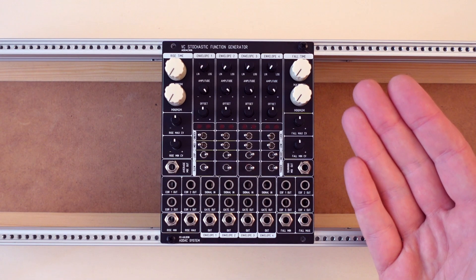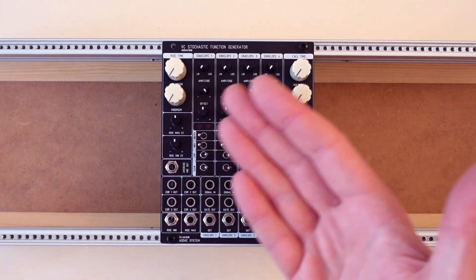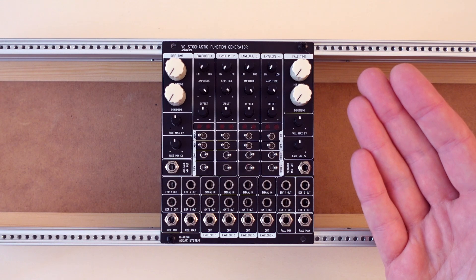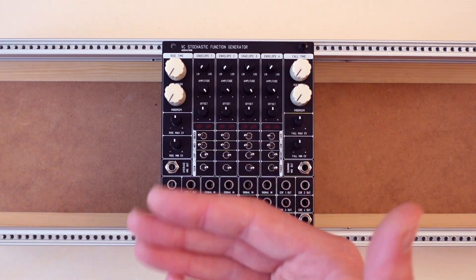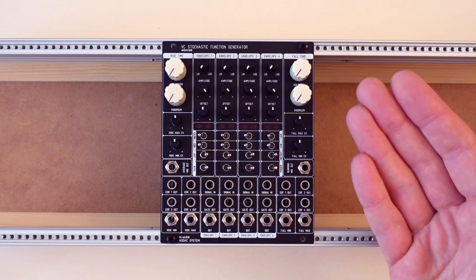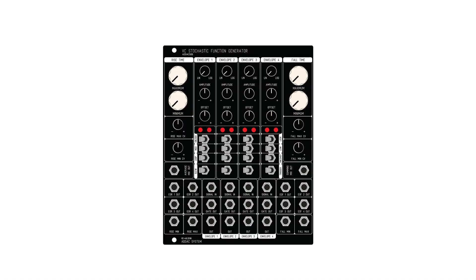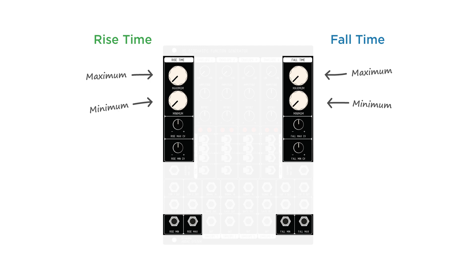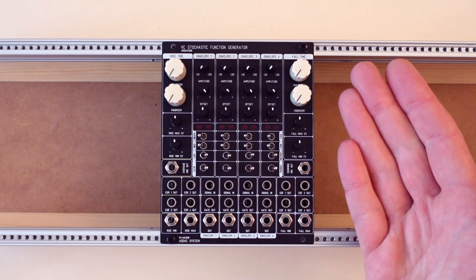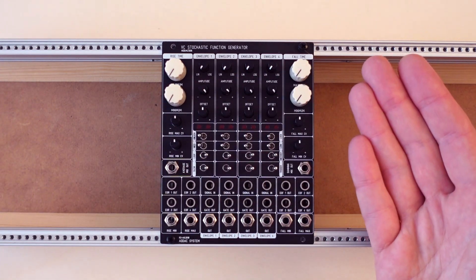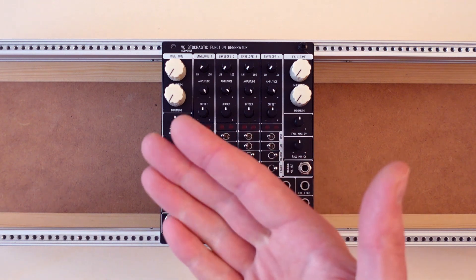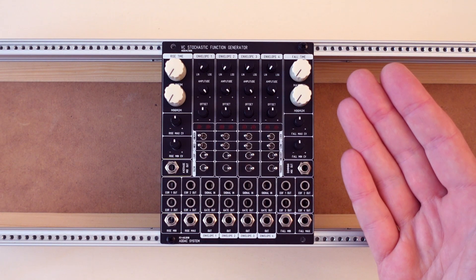The ADAC506 is a quad stochastic function generator. As you can see from the front panel, it's packed with jacks, knobs and switches. This makes it look pretty daunting at first, but it gets a lot more easy to grasp if we break it down into different sections. Most noticeable are the four white knobs — these control the maximum and minimum value for the rise and fall time. Each value can be controlled with an external control voltage at the bottom, and each of those inputs has its own bipolar attenuator for maximum control over incoming CV. All four function generators share these core settings, but you have extensive control over each channel, and can set the value for each individually as well.